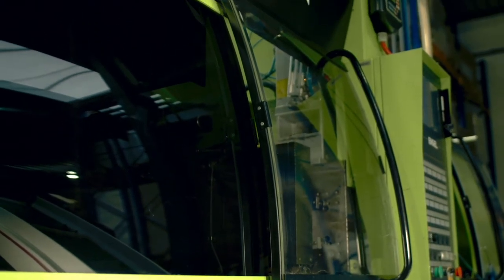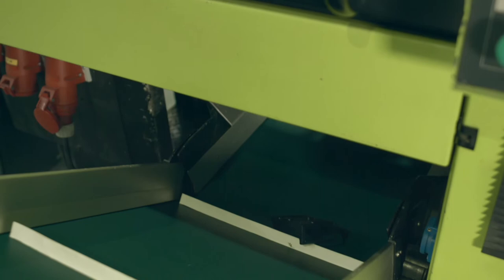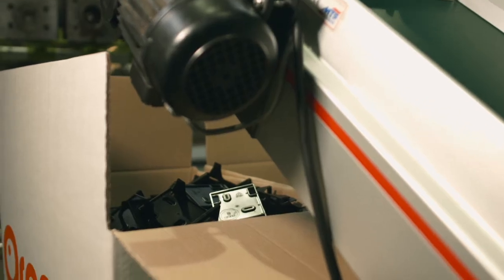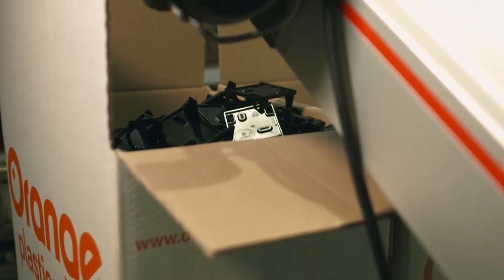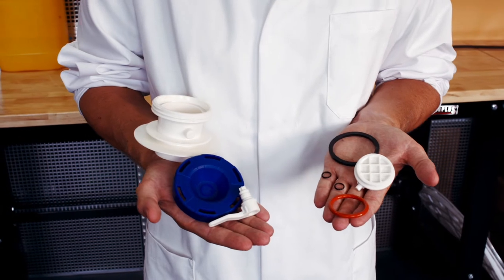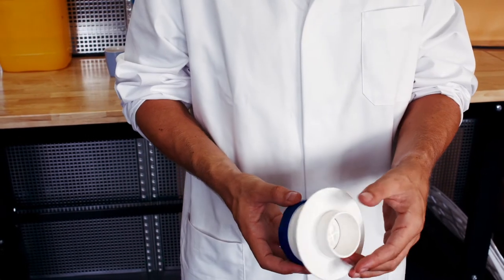After a product is ejected from the injection molding machine, it oftentimes still has some steps to go through before it can be rightfully called a finished product. Because many products are made from multiple parts, these components have to be put together.